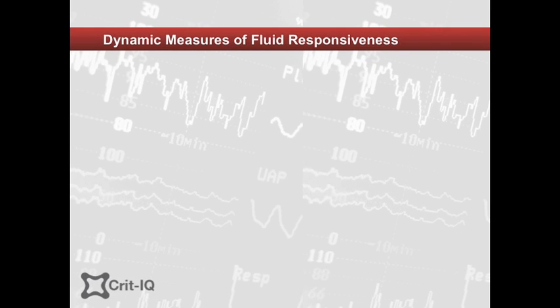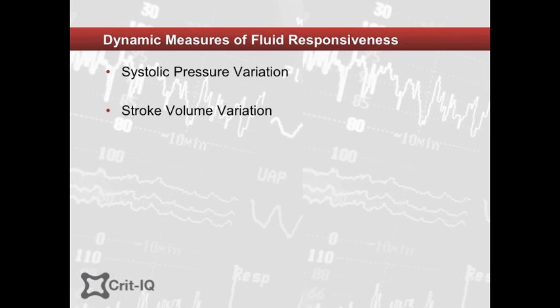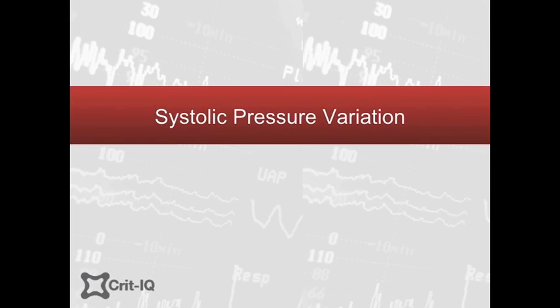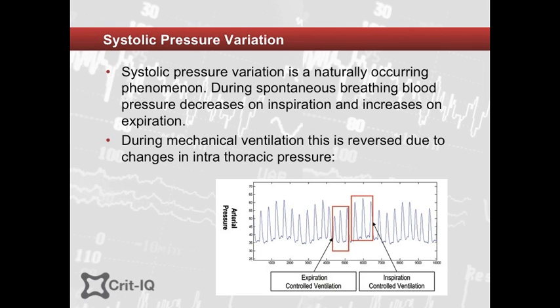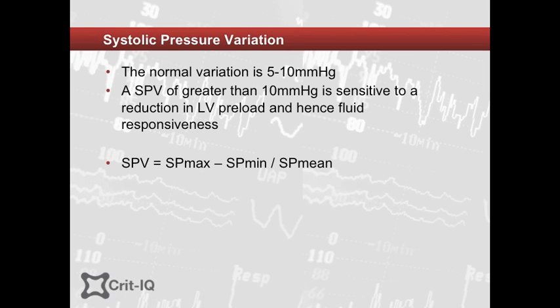Haemodynamic markers that may help in predicting fluid responsiveness include systolic pressure variation or stroke volume variation, which may be obtained with arterial pulse waveform analysis devices such as the Vigileo and PiCCO. In a normal patient breathing spontaneously, blood pressure decreases on inspiration and increases on expiration. An exaggeration of this is known as pulsus paradoxus. The reverse occurs in positive pressure mechanical ventilation. The range of normal peak decrease in systolic pressure has been reported between 5–10 mmHg, and a systolic pressure variation greater than 10 mmHg is sensitive to reductions in LV preload.